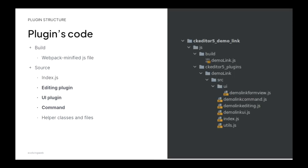Let's look at the plugin structure. We have the build folder and the source folder. The build folder is the minified file; the source folder is the source. In the source folder, we have index.js as the entry point, and we have the editing plugin, UI plugin, and the command. That's the convention we agreed to have — we break our plugin into those three parts. Those are the necessary things: editing, UI, and the command.